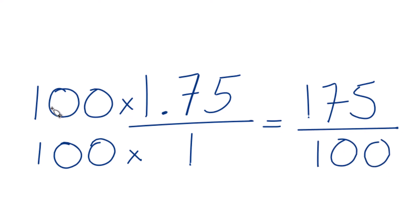And note, we can do this because 100 divided by 100 is just 1. So we're only multiplying by 1. We don't change the value, just the way it's written.